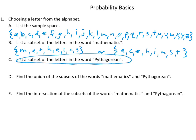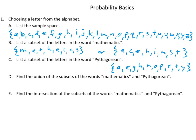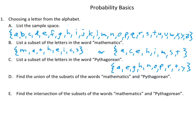The next one, you're going to write the letters in the word 'Pythagorean.' Take a moment to write down those letters. I went with the alphabetical order, because I know what's coming up — we need to compare these.